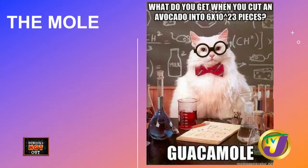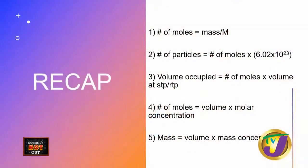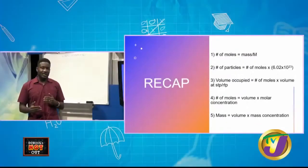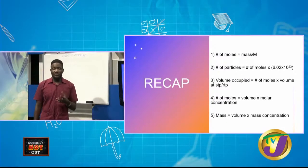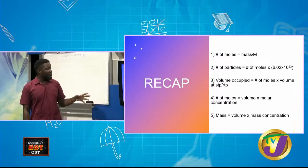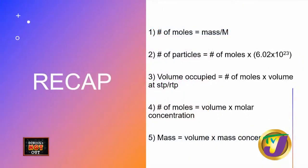Just a recap — here are the five formulas we looked at last week. Number one: number of moles equals mass over molar mass. Number two: number of particles equals number of moles times Avogadro's constant, which is 6.02 times 10 to the 23. Number three: volume occupied — remember, anytime we see volume occupied, that refers to gas volumes.